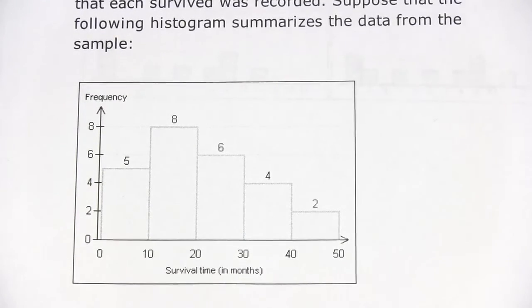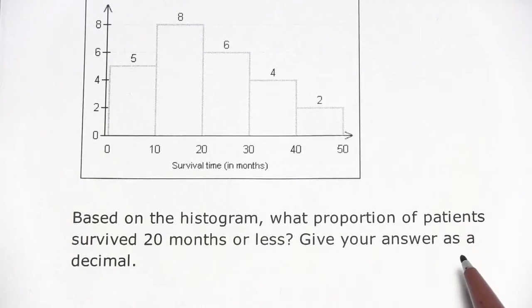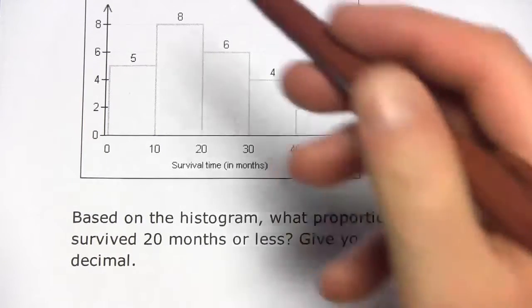The question here, let me pull this up a little bit, says based on the histogram, what proportion of patients survived 20 months or less and give your answer as a decimal.